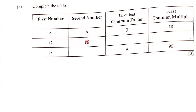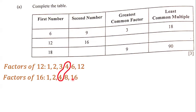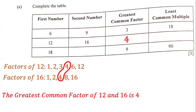The next row contains 12 and 16, and we have to figure out what is the greatest common factor of 12 and 16. The factors of 12 are 1, 2, 3, 4, 6, and 12. The factors of 16 are 1, 2, 4, 8, and 16. So the greatest common factor of 12 and 16 is 4. We put 4 right here on the table.